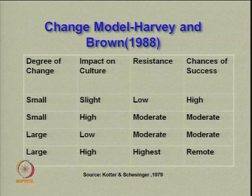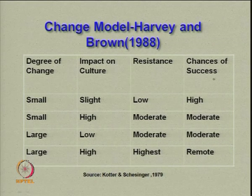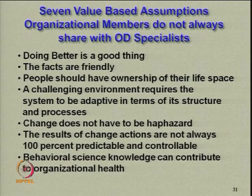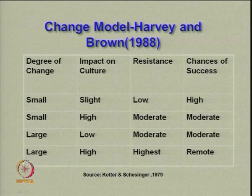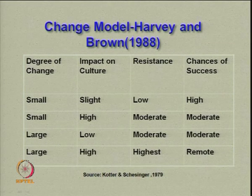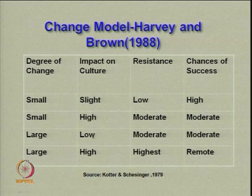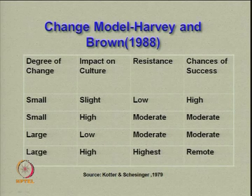The change model goes back to Harvey and Brown. It has four columns: degree of change, impact on culture, resistance, and chances of success. If degree of change is small and impact on culture is slight, resistance is low and chances of success are high. If degree of change is small but impact on culture is high, resistance is moderate and chances of success are moderate. If degree of change is large and impact of culture is low, resistance is moderate and chances of success are moderate. If degree of change is large and impact is high, resistance is highest and chances of success are remote.